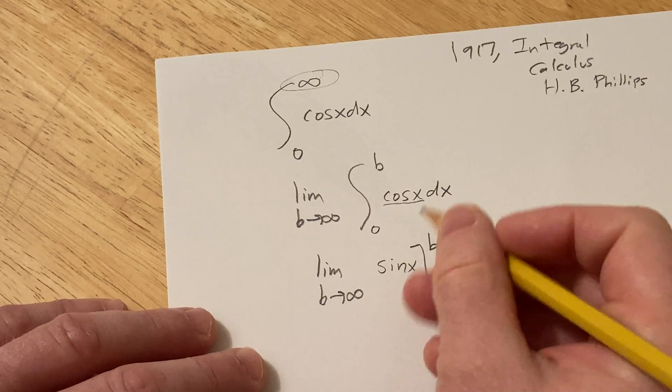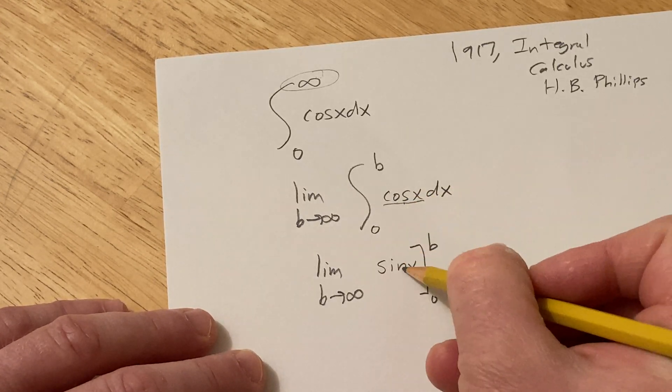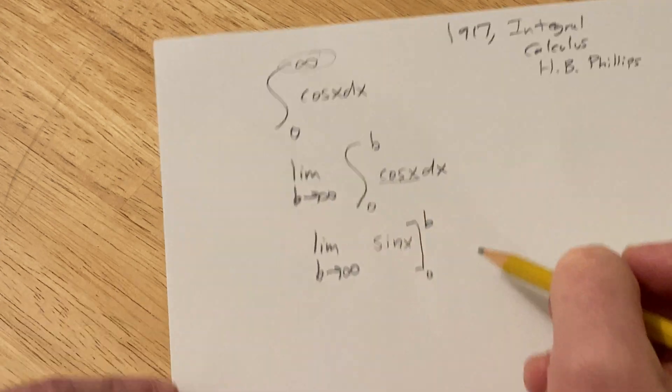Right? And the derivative of sine is cosine. Therefore, the integral of cosine is sine. So it just works back and forth like that.